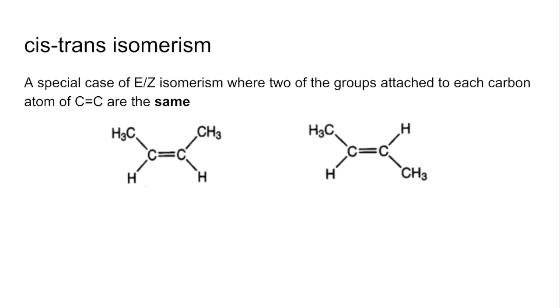So I'll use but-2-ene to explain that. You can see on each carbon atom of the carbon-carbon double bond we've got an identical group, so we could either be looking at the methyl groups or the hydrogens.